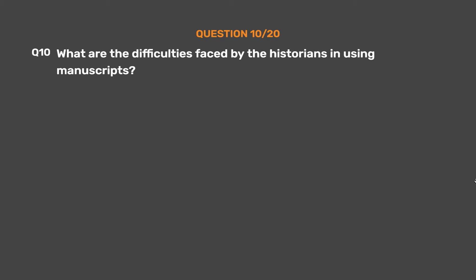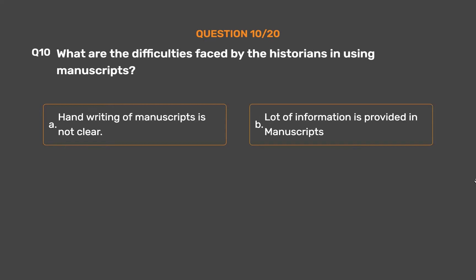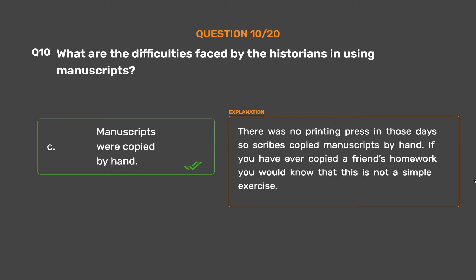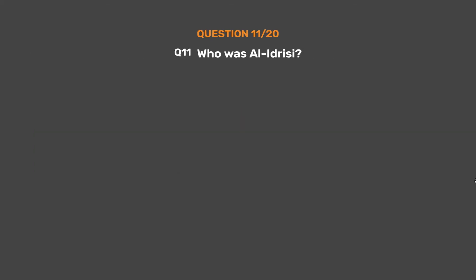Question 10: What are the difficulties faced by historians in using manuscripts? Option A: Handwriting of manuscripts is not clear. Option B: A lot of information is provided in manuscripts. Option C: Manuscripts were copied by hand. Option D: None of these. The correct answer is Option C: Manuscripts were copied by hand. There was no printing press in those days, so scribes copied manuscripts by hand — not a simple exercise.